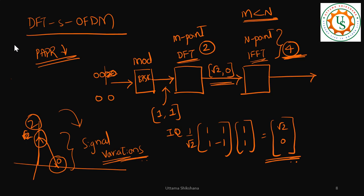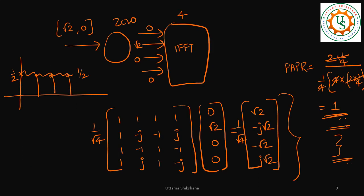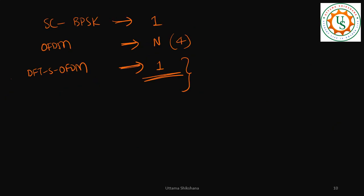Whereas in this case, we are seeing that once we do the power calculation, the power spectrum shows signal variations are less. And hence we expect here that the PAPR is reduced. And as per our mathematics also, the PAPR is reduced. So now I think you got the concept of how DFT-SOFDM is reducing the PAPR.